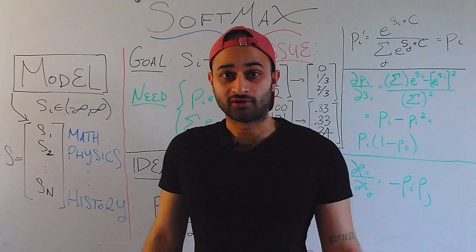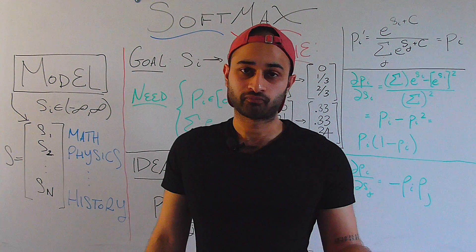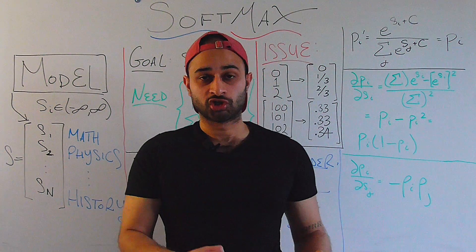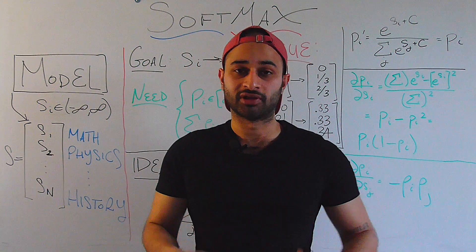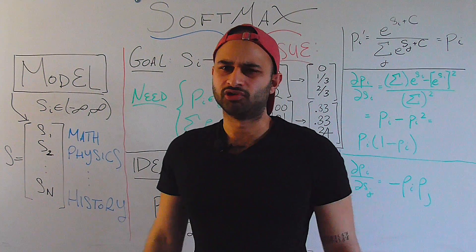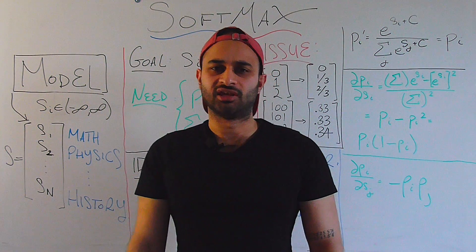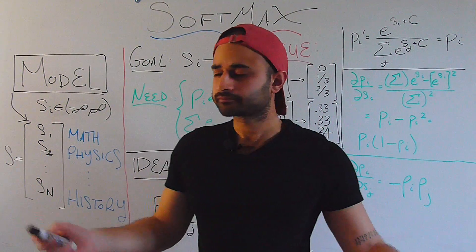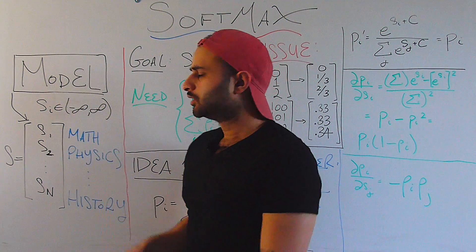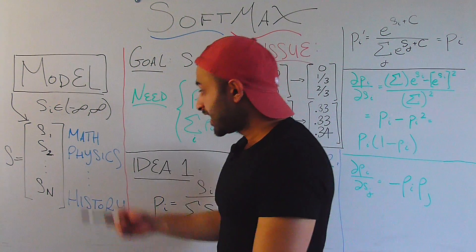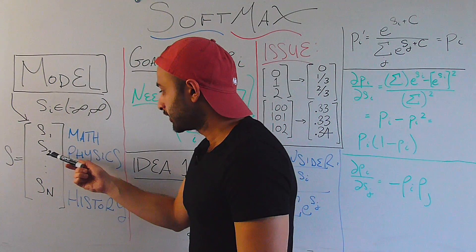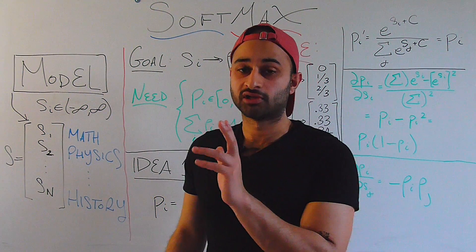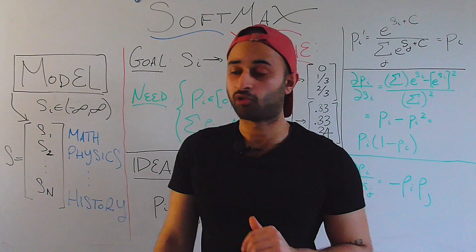The setup is that we are data scientists for an education system, and our current task is we're trying to predict what major a high schooler will choose when they first enter college. And we'll be using some information, like the previous academic history of the student. The model itself really doesn't matter, and it's not the point of this video. But just suffice to say that we've built some model which outputs n scores, so s1, s2, all the way to s sub n. So this is how it's multi-dimensional instead of just single-dimensional where we are looking at the sigmoid.